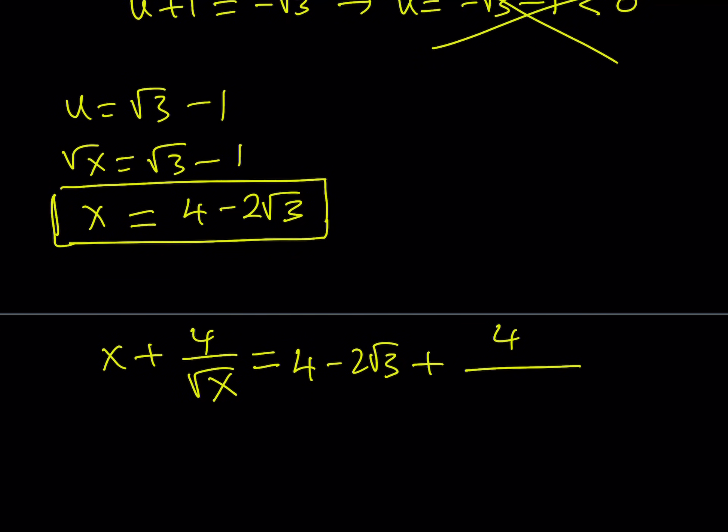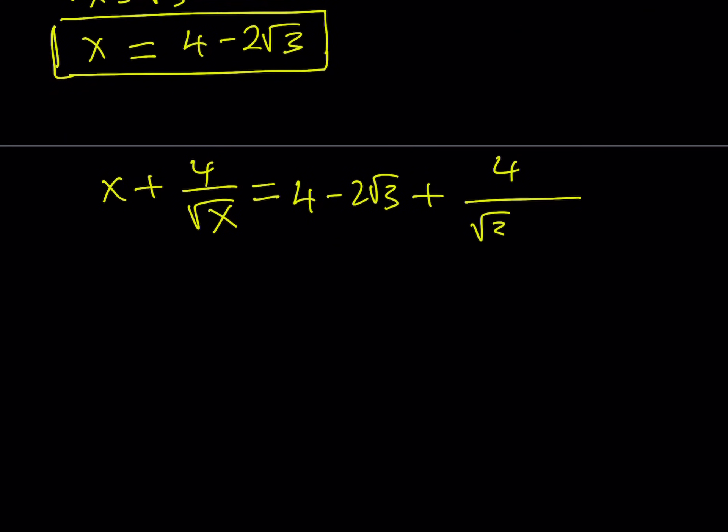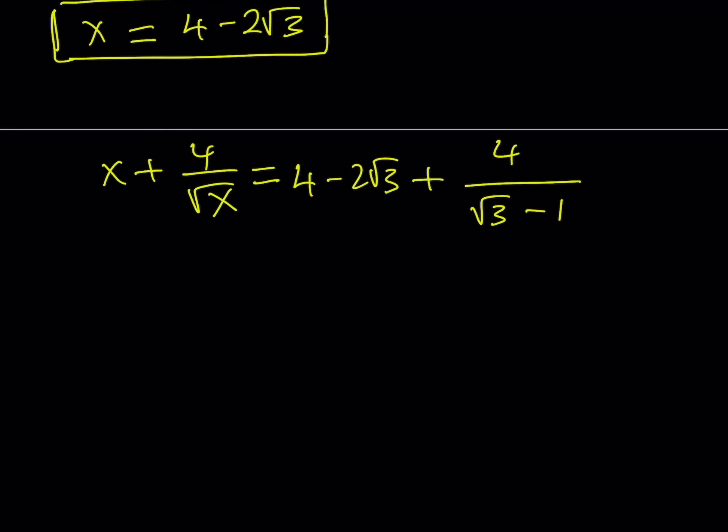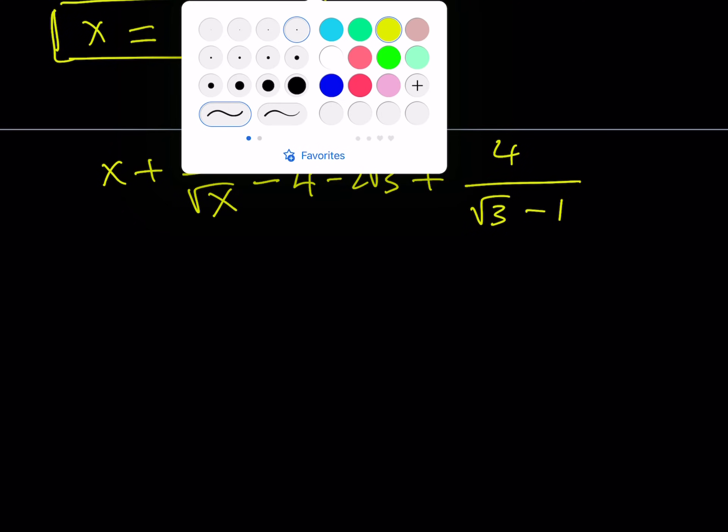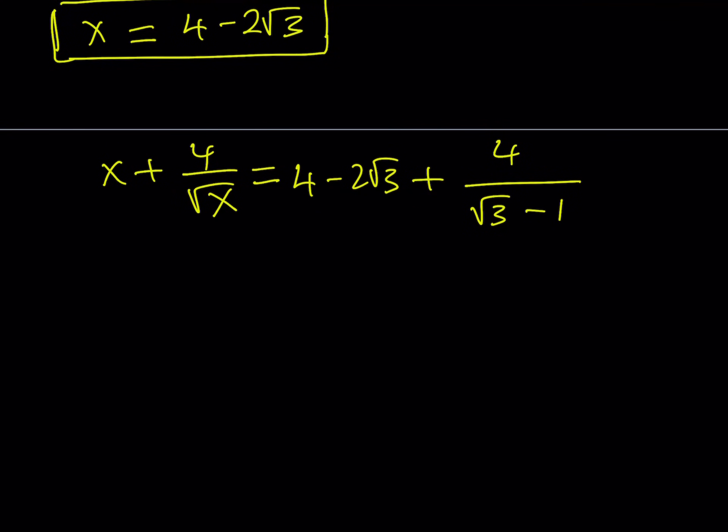Remember, u is equal to square root of x and square root of x is equal to root 3 minus 1. Great. So, we got a radical expression. And we want to simplify this because we want to write it in the simplest form. So, let's go ahead and multiply the top and the bottom by the conjugate, which is root 3 plus 1.